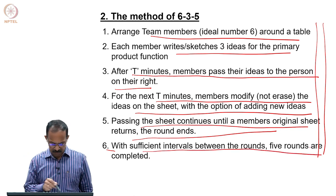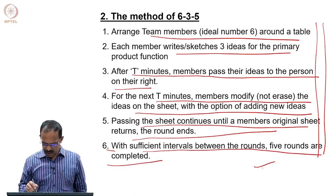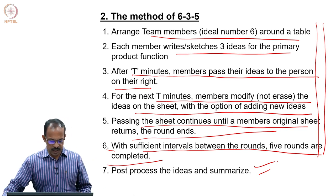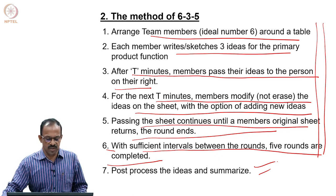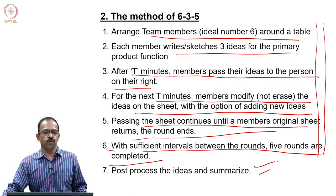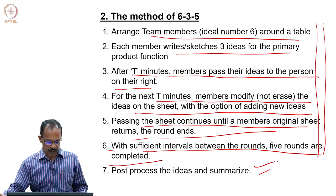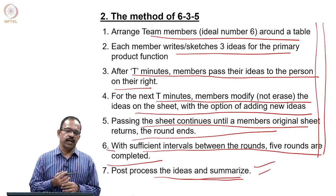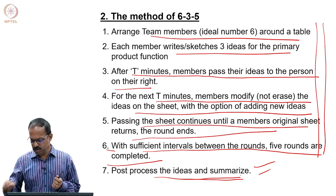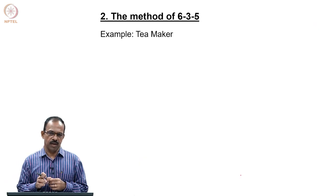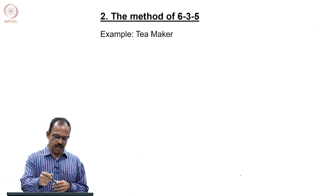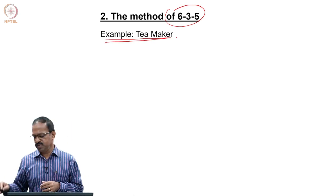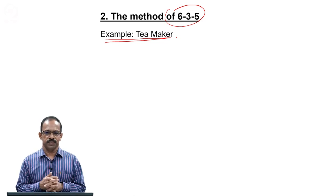With sufficient intervals between rounds, 5 rounds are completed and you get a large number of ideas. We will take an example in the next class and see how the 6-3-5 method can be used for solving design problems. Once after the ideas, you need to summarize and develop concepts based on those ideas. We will use the method of 6-3-5 in the case of designing tea makers — that we will see in the next class. Thank you.